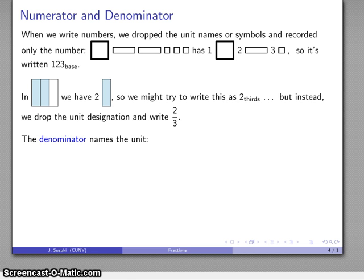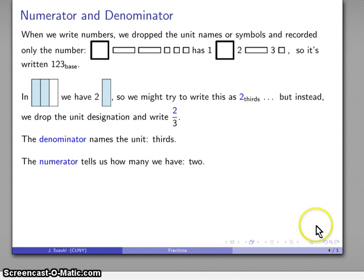Now there's some important terms here. The denominator names what the unit is. Here my units are thirds - there's three of them - and so that's going to be the value in the denominator. This number tells you how big each piece is. The other component we have is the numerator, which tells us how many we have - it numbers them. I have two pieces, I have two-thirds, and I'm going to write that number in the numerator. The numerator tells you how many, the denominator tells you how big.